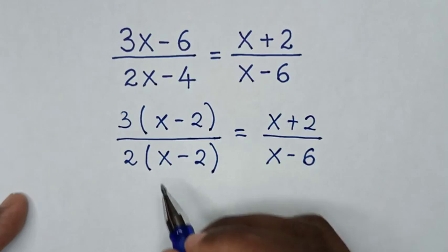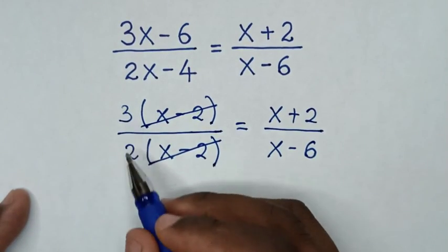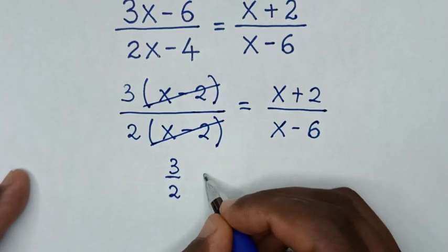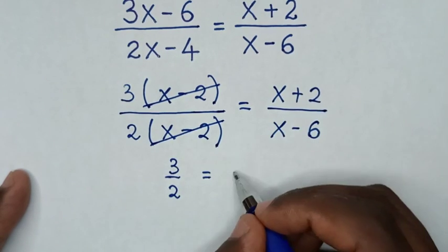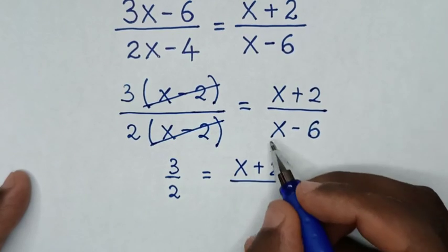Then in the next step, we will simplify. This x minus 2 will cancel with this x minus 2. So it will be 3 over 2 is equal to x plus 2 over x minus 6.